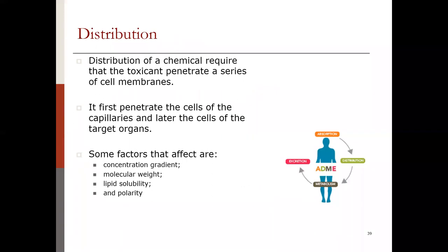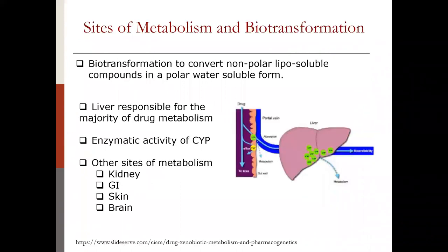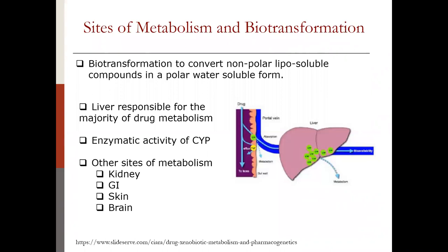Once absorbed, distribution of a chemical requires that the toxicant penetrate the membranes and first enter the capillary cells, then move around different organs and tissues. Factors that affect distribution include the concentration gradient, the molecular weight of the contaminant, how lipid-soluble it is, and how polar it is. The key aspect of metabolism is to transform a compound that is more lipid-soluble so that it becomes more water-soluble and can be eliminated — this process is called biotransformation, converting a nonpolar, liposoluble compound into a more polar, water-soluble one.